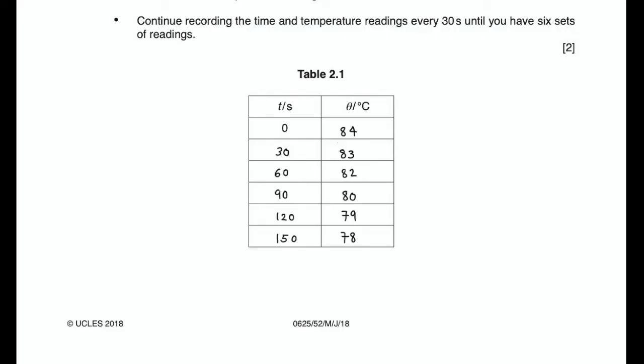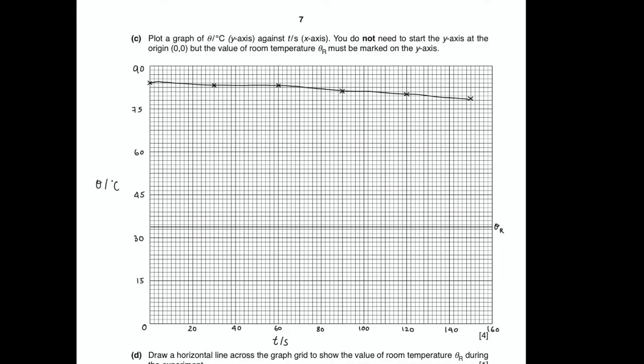Record all the temperatures in the table provided. The next question is to plot this data in a graph. The x-axis will be labeled time while the y-axis will be the temperature. The scale on the x-axis will be 1 unit equals 20 seconds and the scale on the y-axis will be 1 unit equals 15 degrees Celsius. We will also have to draw a horizontal line on the graph to indicate room temperature.